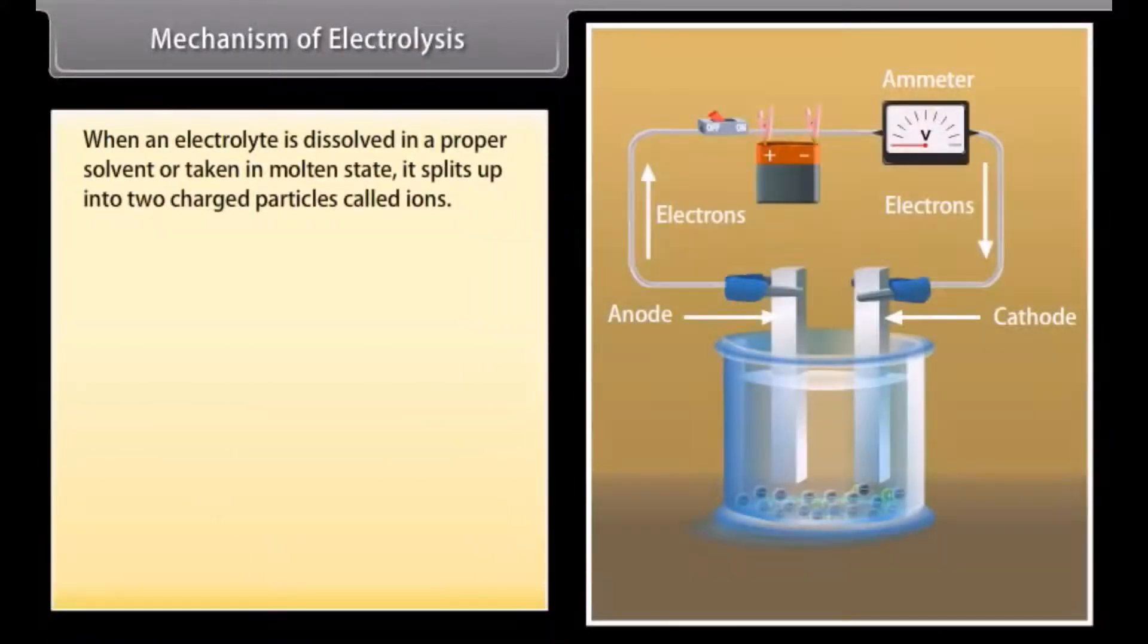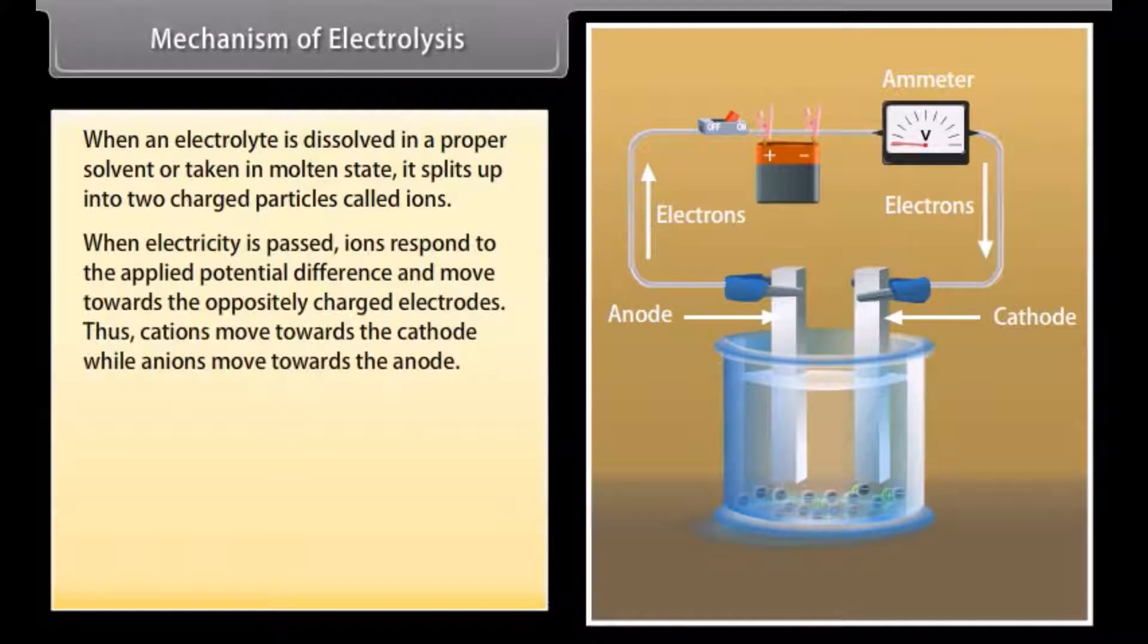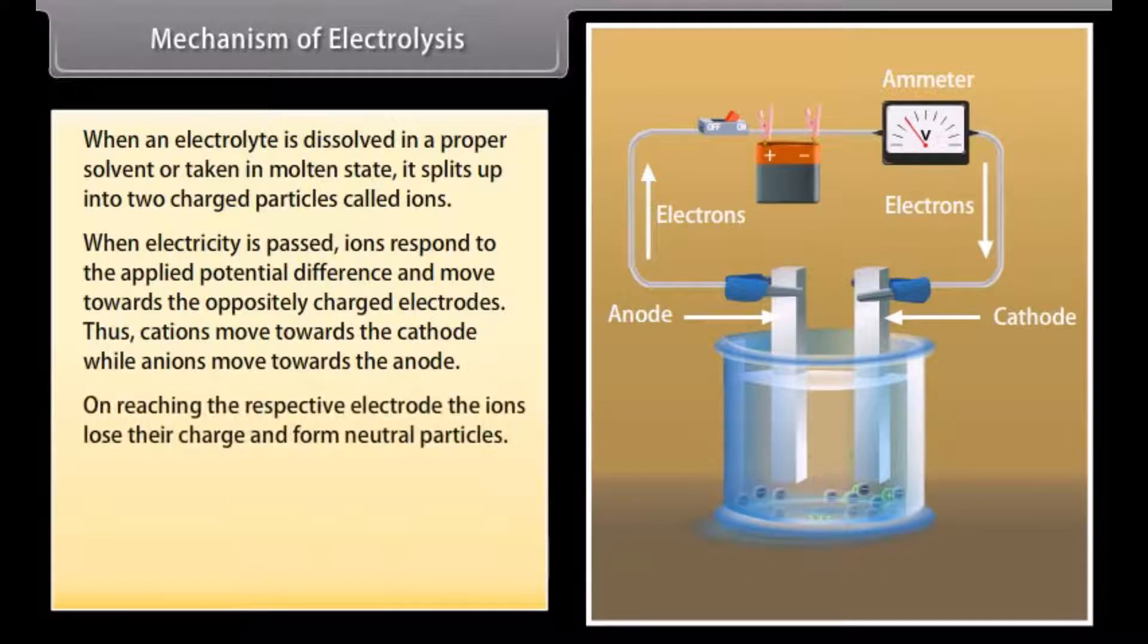Mechanism of electrolysis. When an electrolyte is dissolved in a proper solvent or taken in molten state, it splits up into two charged particles called ions. When electricity is passed, ions respond to the applied potential difference and move towards the oppositely charged electrodes. Thus, cations move towards the cathode while anions move towards the anode.